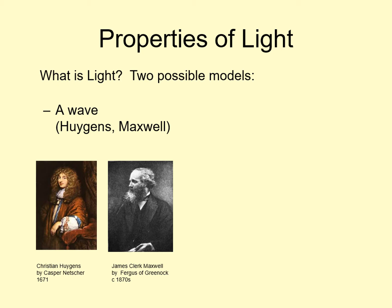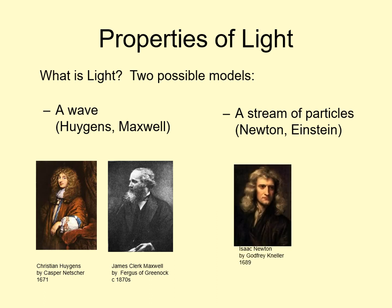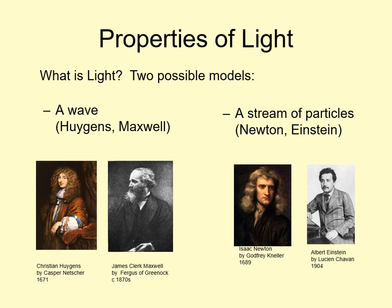On the other hand, it could be that light is a stream of some sort of particles. Isaac Newton was a big proponent of this idea. So was Albert Einstein. Einstein received his Nobel Prize for his work on understanding light as particles, not for relativity. So which idea is right? We'll look at both of these approaches, and then see how the question was resolved in the early 20th century.